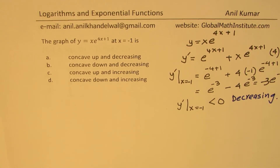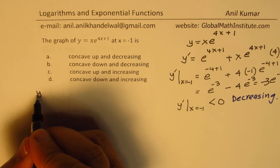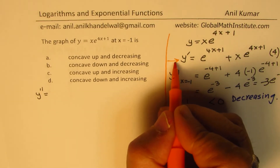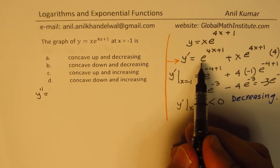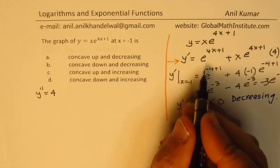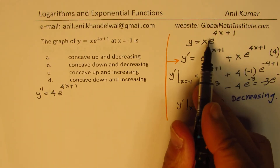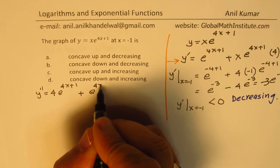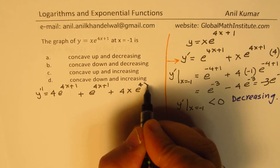Now we'll work on the concavity. We have the first derivative and we'll find the second derivative for this function. The derivative of e to the power of 4x plus 1 is 4·e to the power of 4x plus 1. So we write the second derivative as: 4·e to the power of 4x plus 1, plus e to the power of 4x plus 1, plus 4x·e to the power of 4x plus 1.